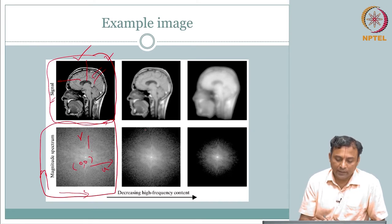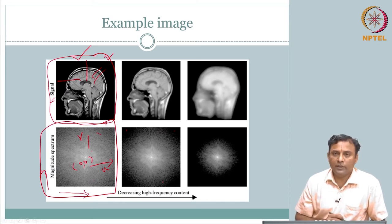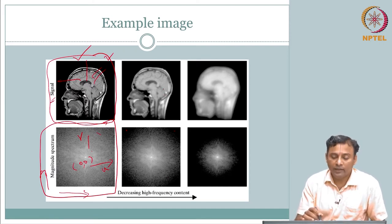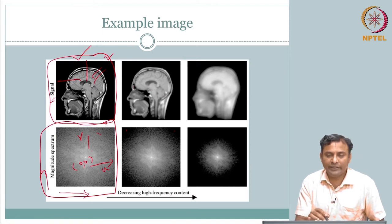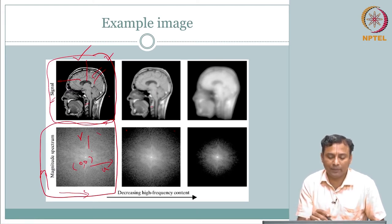For example, if you remove frequencies above a certain frequency — blackening out the high frequencies — the high frequencies are removed. When you remove the high-frequency content, how does the image look? It looks blurred. More precisely, the edges are now less prominent. You still see the shape of the head and the brain structures, but it is not sharp — the transitions are not as sharp as in the original image.